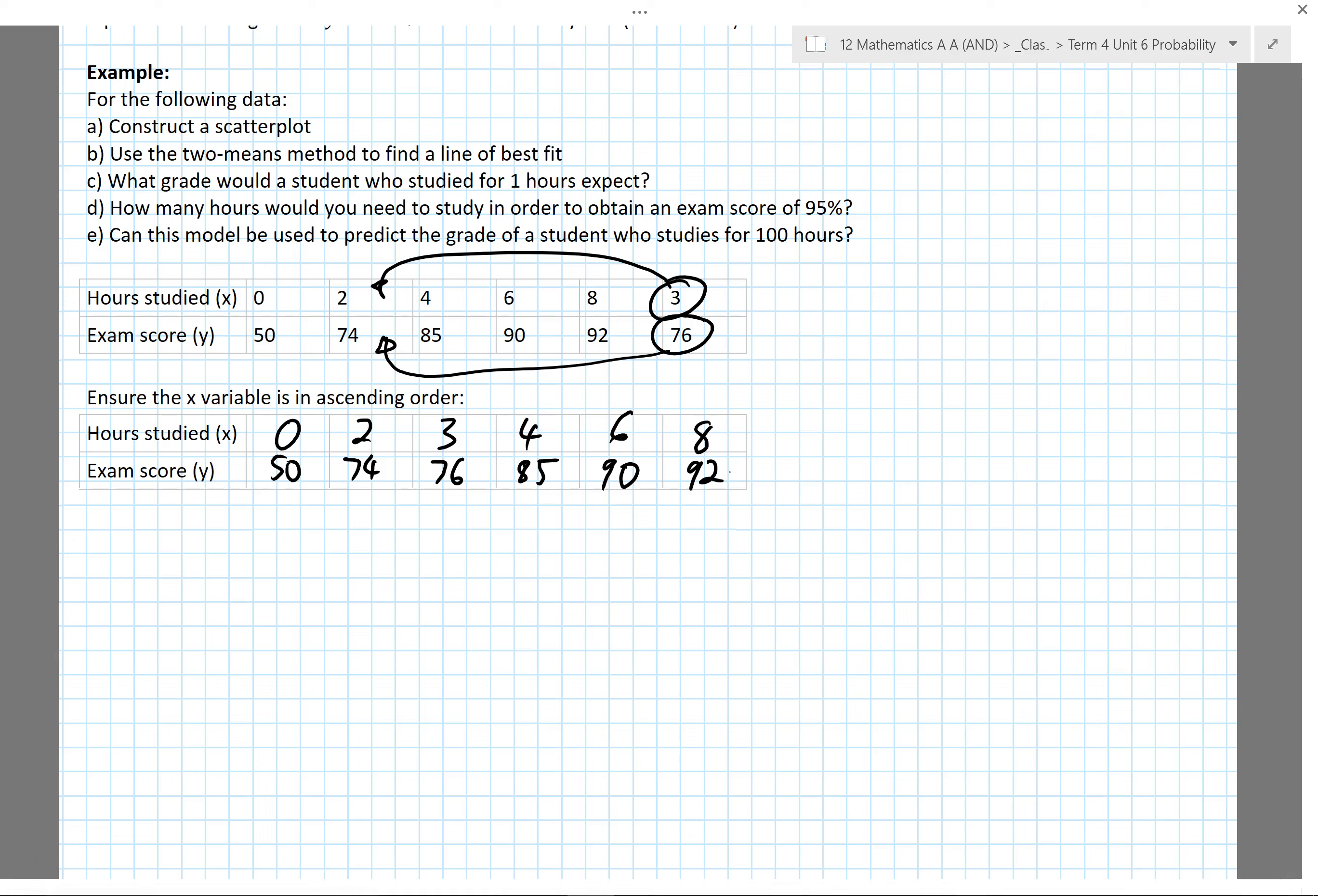Now that I've got them in ascending order, I can divide the table into two sections, upper and lower. I'll divide it pretty much there and find for the lower half the mean hours and the mean exam score. Then we'll do the same thing for the upper half, just adding those three together and dividing by three.